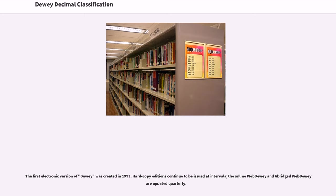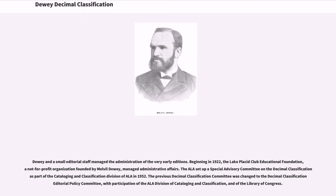The first electronic version of Dewey was created in 1993. Hard copy editions continue to be issued at intervals; the online WebDewey and abridged WebDewey are updated quarterly. Dewey and a small editorial staff managed the administration of the very early editions. Beginning in 1922, the Lake Placid Club Educational Foundation, a not-for-profit organization founded by Melville Dewey, managed administrative affairs. The ALA set up a special advisory committee on the decimal classification as part of the Cataloguing and Classification Division of ALA in 1952. The previous Decimal Classification Committee was changed to the Decimal Classification Editorial Policy Committee, with participation of the ALA Division of Cataloguing and Classification and of the Library of Congress.